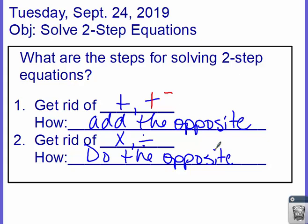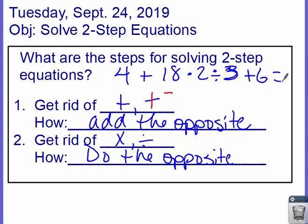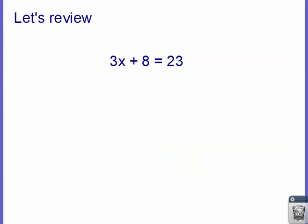And the reason why we do it in this particular order is because if I gave you an order of operations problem — let's say 4 plus 18 times 2 divided by 3 plus 6 — the first thing we would do is multiply, then divide, then add 4, then add 6, and end up with some answer. So in an equation, we already have an answer, and our job is to find out what we did to get that answer.